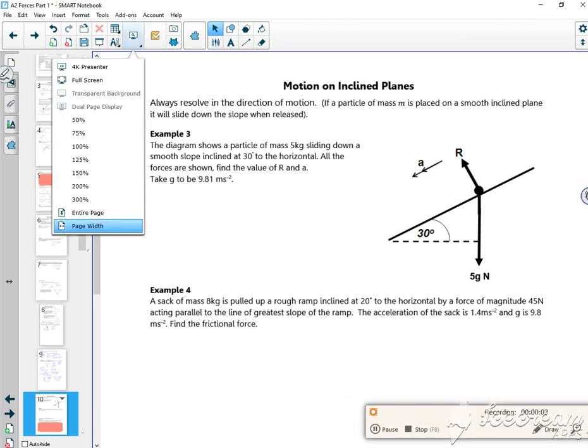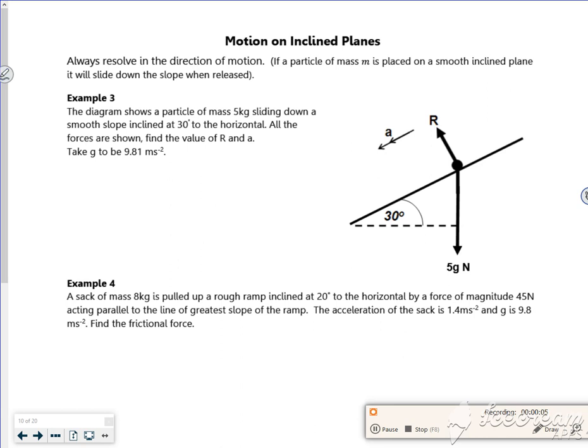Hi, so in the last viz it was stationary, it was an equilibrium, but this time it's moving down the slope. So I've got my 5g, I've got the components from there with my 30, which if I draw it separately.